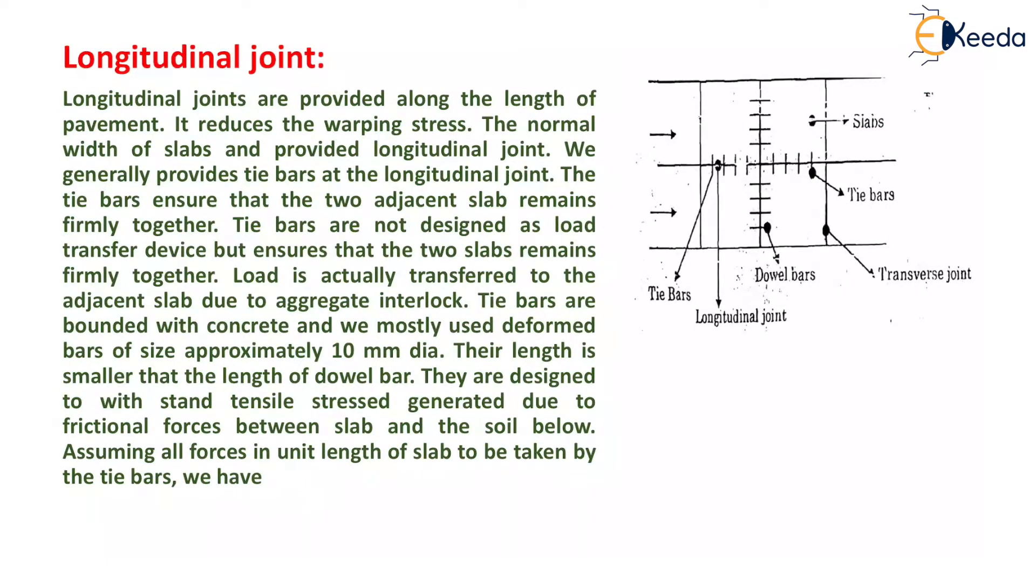Now, the next joint is the longitudinal joint. Longitudinal joints are provided along the length of the pavement. They reduce the warping stress and control the normal width of slabs. We generally provide tie bars at the longitudinal joint.